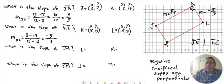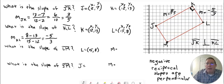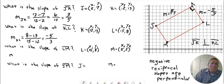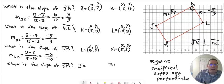Let's find the slope of LM. L is 15, 8, and M is 5, 2. Call L X1, Y1 and M X2, Y2. The slope of LM equals Y2 minus Y1 over X2 minus X1 — that's 2 minus 8 over 5 minus 15. Evaluate: 2 minus 8 is negative 6, and 5 minus 15 is negative 10. Reduce: negative divided by negative is positive. 6 and 10 are both divisible by 2, giving us 3 over 5. The slope of LM is 3 fifths.